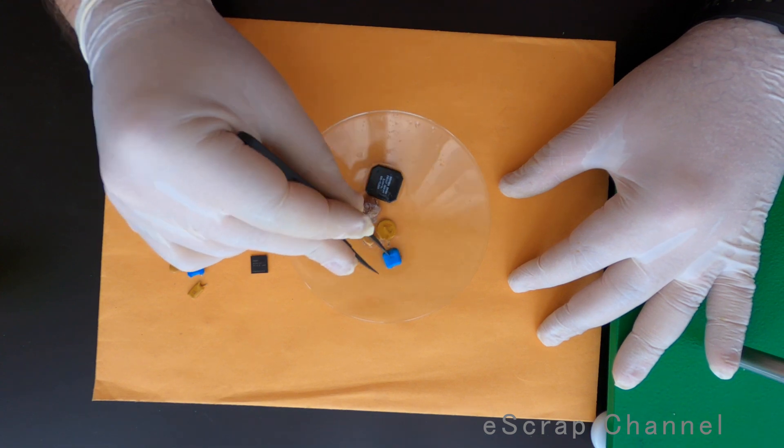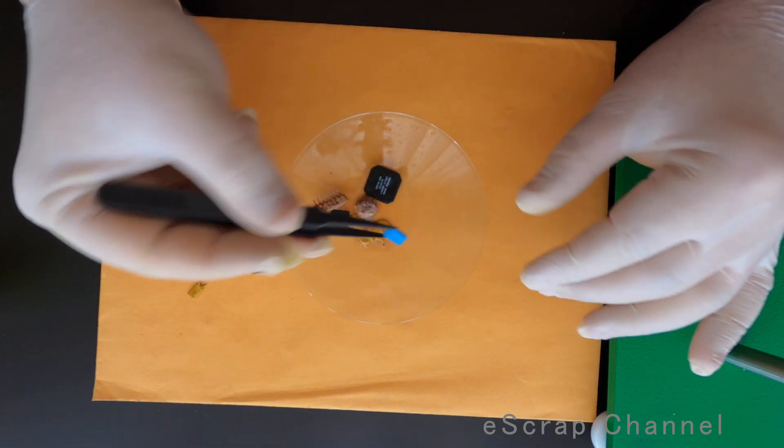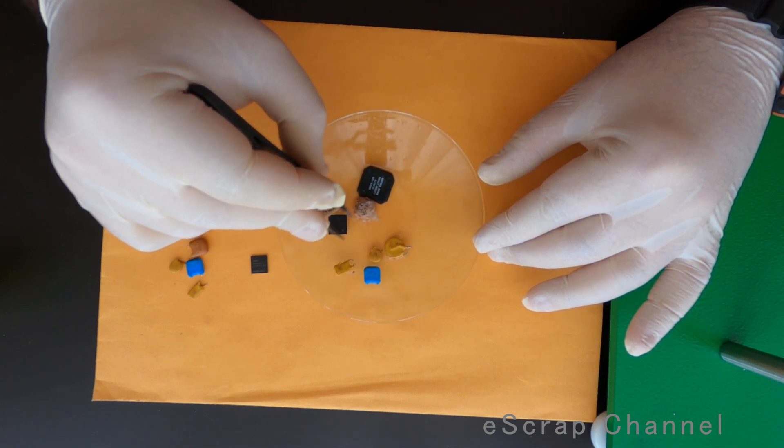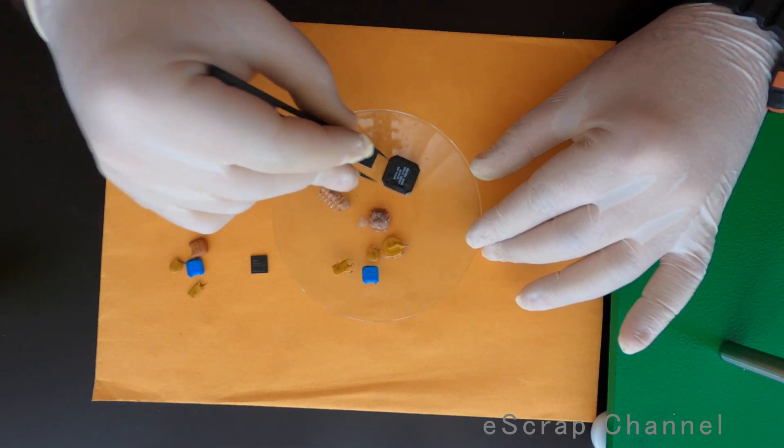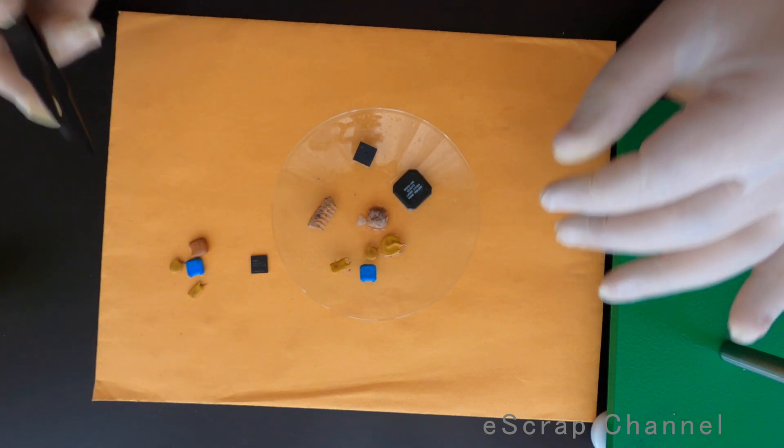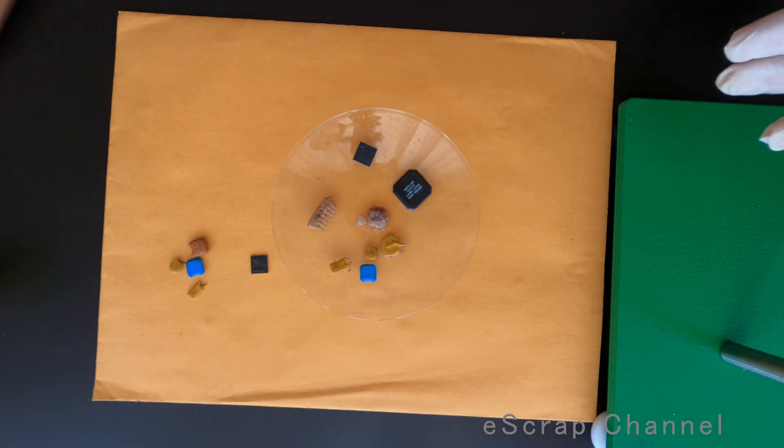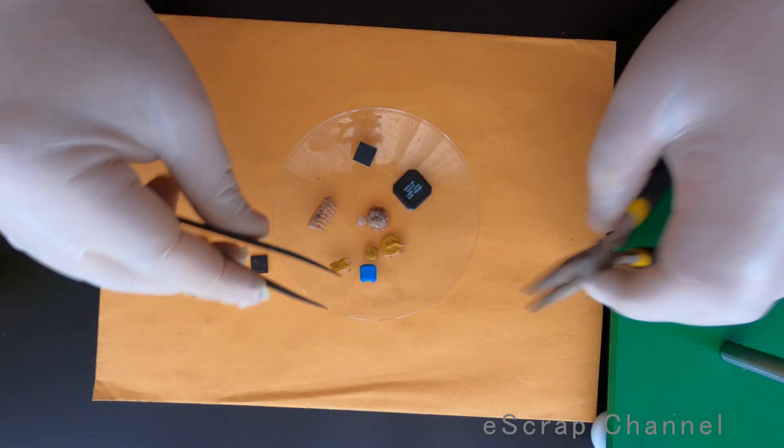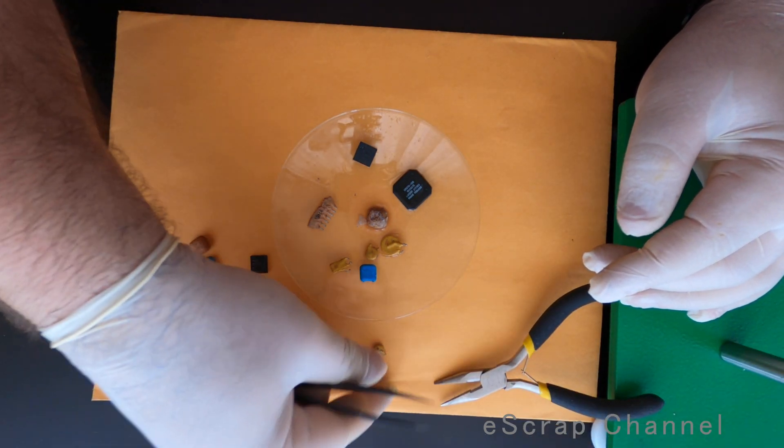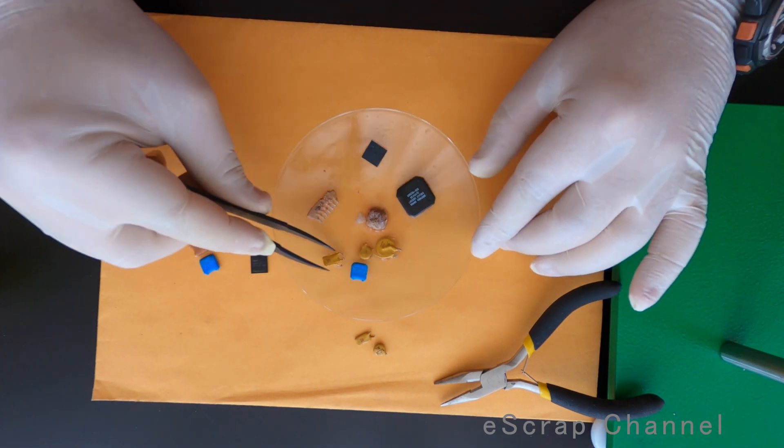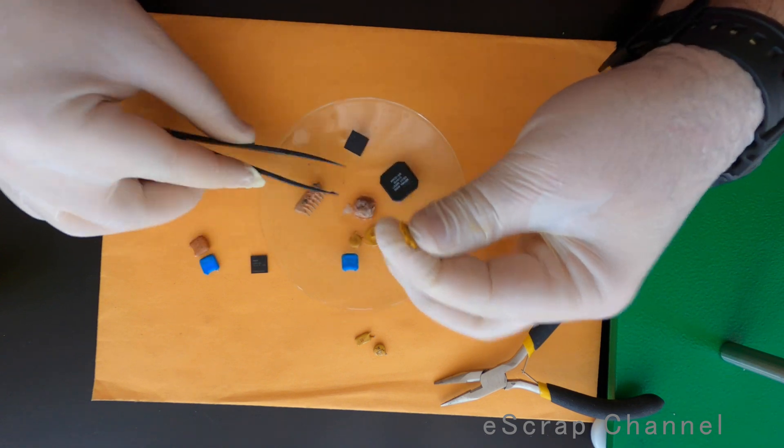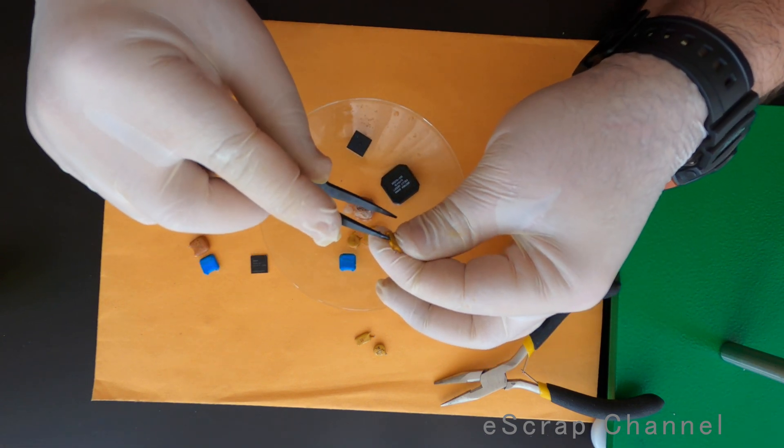So here we go. These are our capacitors that spent about 30 minutes in DMSO heated at about probably 80 degrees all the time and let's see what actually happened, what we have. So originally we have had these two capacitors and after 30 minutes in DMSO that's the result.